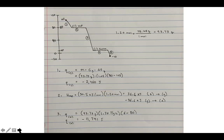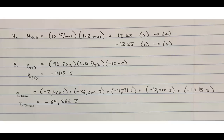Step 4 is the fusion step. Enthalpy of fusion = 10 kJ/mol, and with 1.2 moles that's 12 kJ. But fusion refers to solid-to-liquid; here we're going liquid-to-solid, which is the reverse. So step 4 involves negative 12 kJ. Step 5: heat of the solid. Mass 93.73 g, specific heat of solid = 1.51 J/(g·°C), and ΔT = −10 − 6 = −16°C, giving a heat of −1,415 joules for step 5.